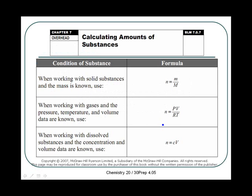Most of the time we won't be given the number of moles in a question. Moles can't be measured directly — they can only be measured indirectly. So we have to be given a mass, or a volume, or a volume and a concentration in order to figure out how many moles of something we have. In this lecture we're going to be working with mass and figuring out, if we're given a mass of one thing, how much of something else will be made in terms of mass.